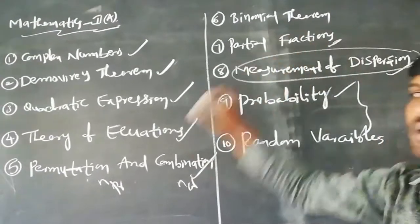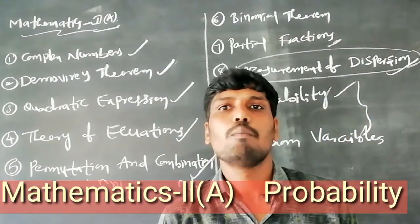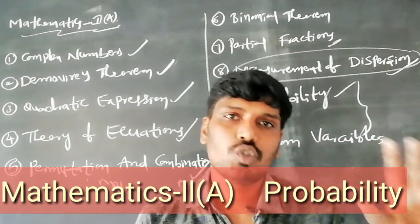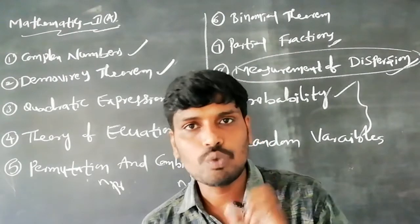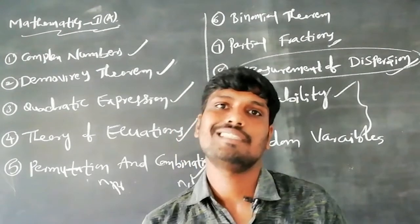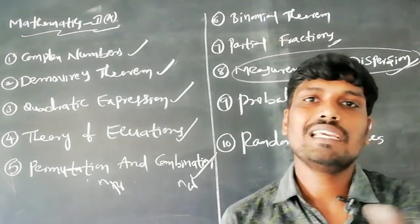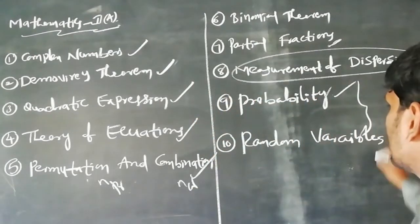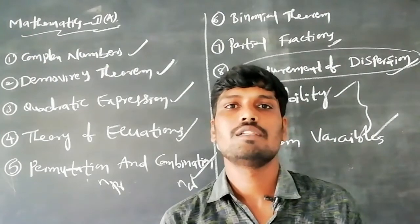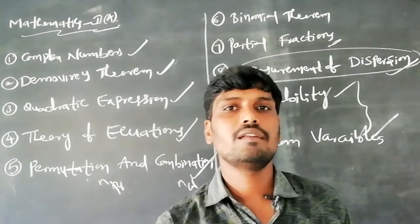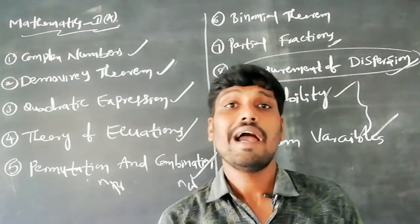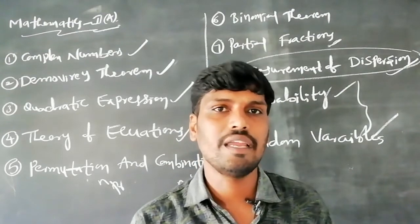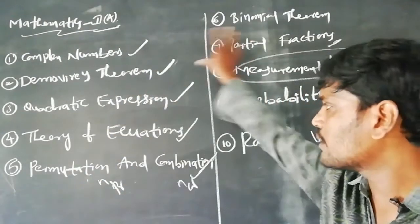The next chapter belongs to Probability — at least two questions come from this section. Topics include mutually exclusive events, exactly two events, sample space, coin toss, and die rolling problems. Random Variables also appear, covering mean, median, variance, standard deviation, Binomial distribution, and Poisson distribution — a very easy topic from the MSET point of view.